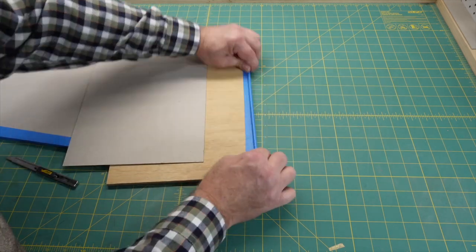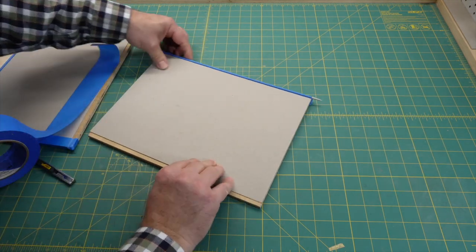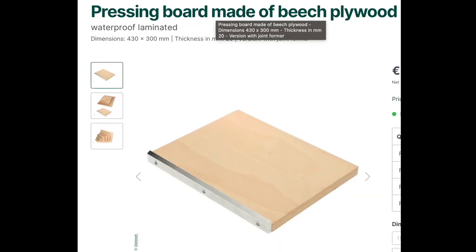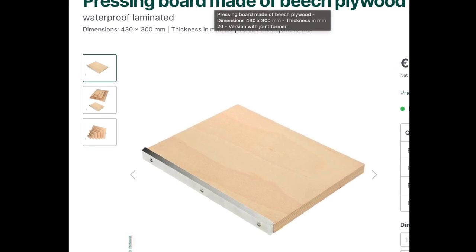In the past, it was common to have pressing boards with a strip of brass along the edge to press into the hinge. Schmett have a version of the brass edged board with an angled edged strip of metal, which they describe as a joint former.